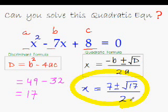That's it, question solved. So the two roots of this very tricky quadratic equation are x equal to 7 plus root 17 over 2, and x equal to 7 minus root 17 over 2.